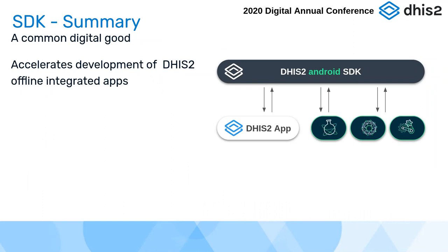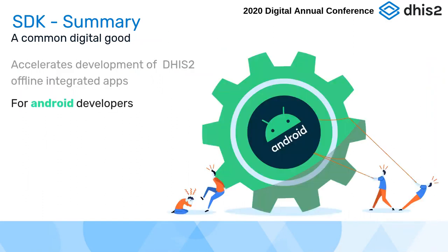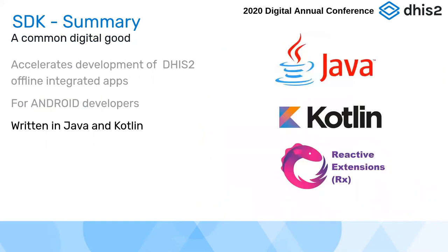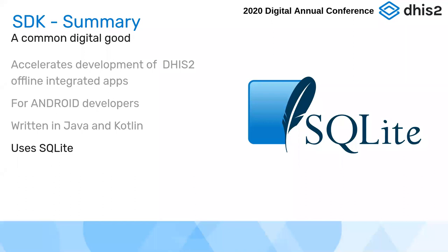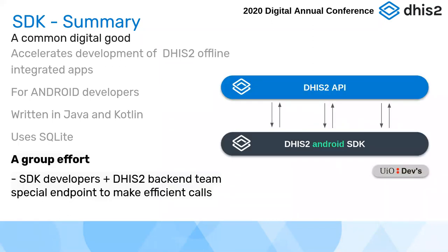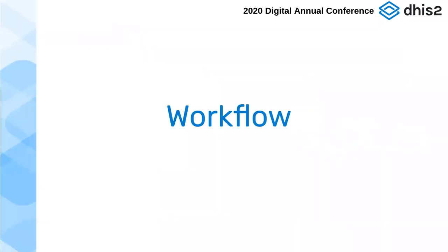To summarize: the SDK is something to facilitate the development of Android applications. It's a product for Android developers, not end users. It's written in Java, although we are moving to Kotlin, which is now the first-class language for Android — the SDK is compatible with both. It has an internal SQLite database, and it is the result of a group effort from the SDK team and the backend team together to optimize API calls for maximum efficiency.